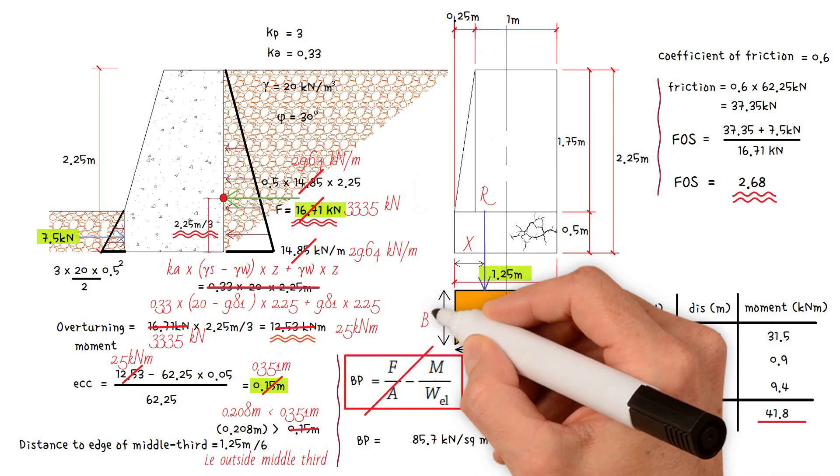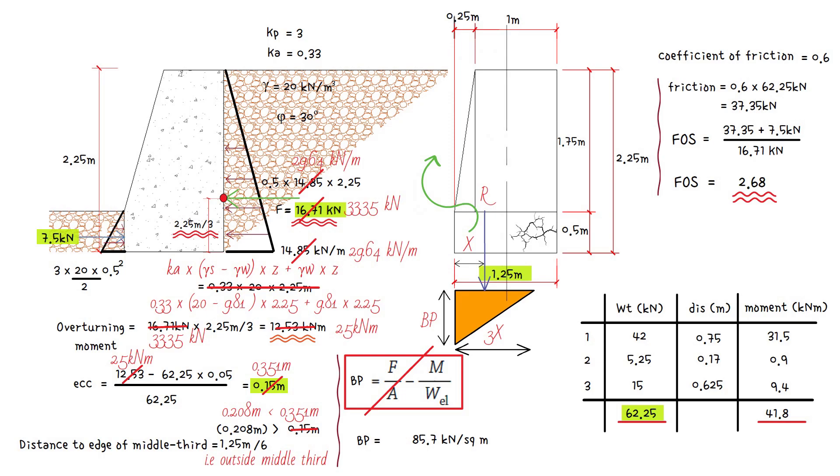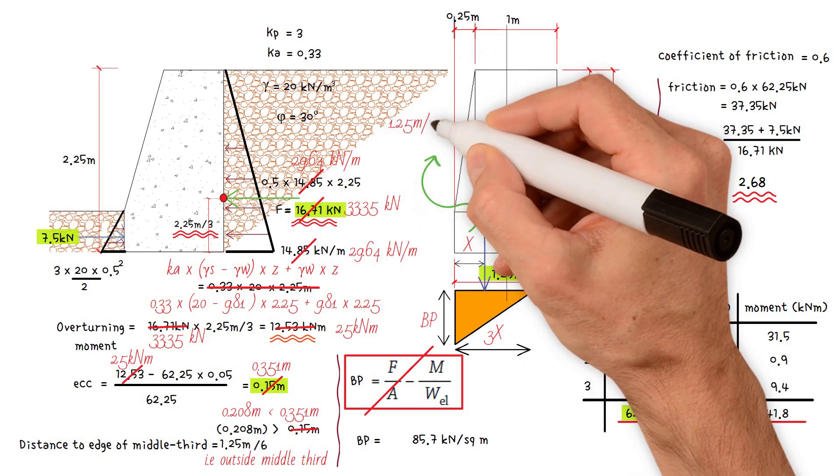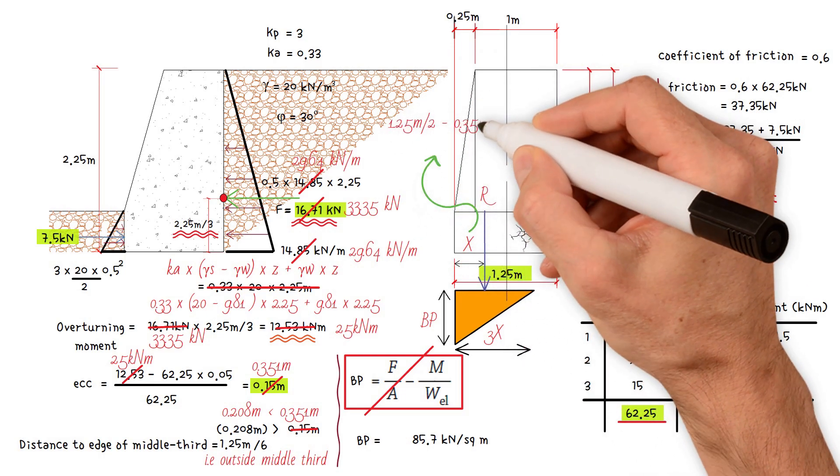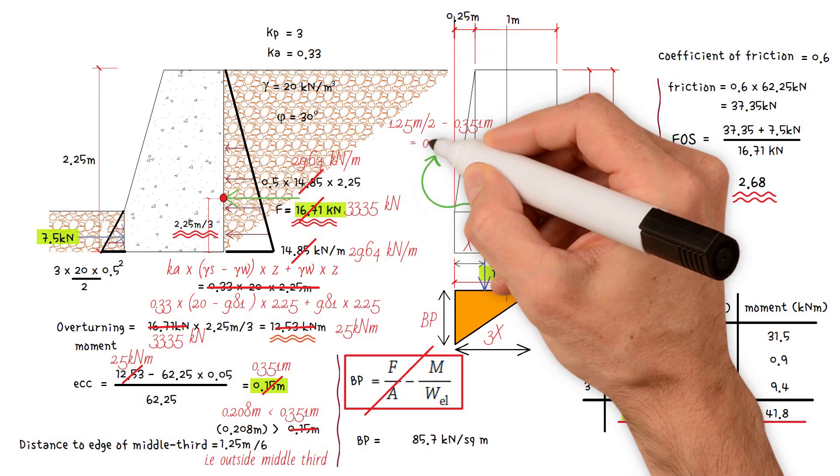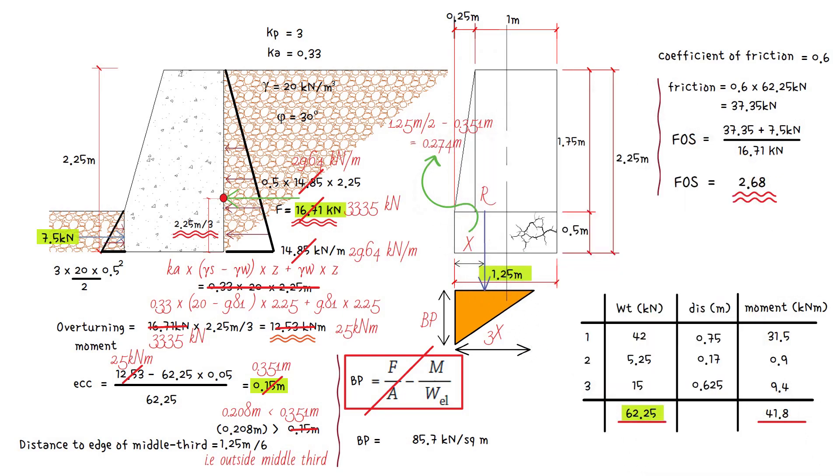Therefore, x equals half of 1.25 meters minus 0.351 meters, which is equal to 0.274 meters. So the maximum bearing pressure would be 2 times 62.25 kilonewtons divided by 3, divided by 0.274 meters. We get a value of 151.5 kilonewtons per square meter.